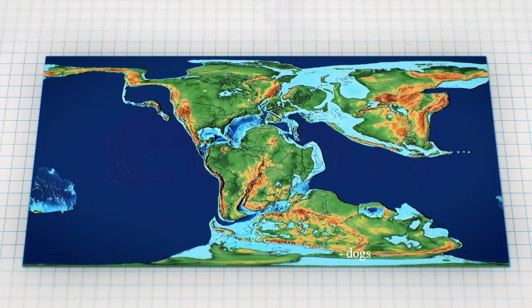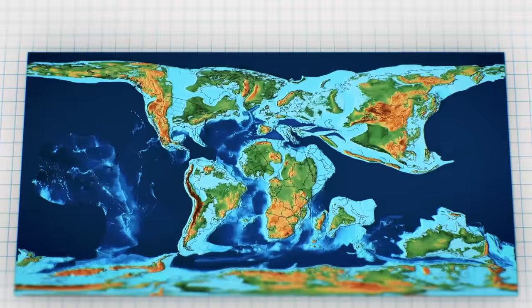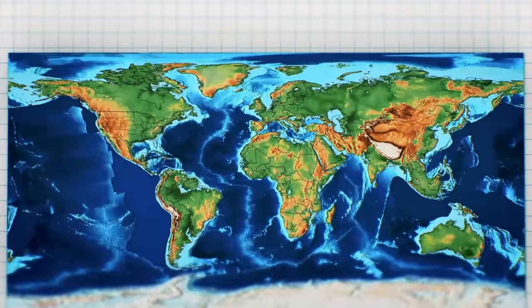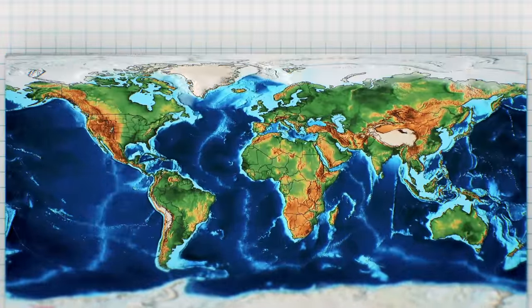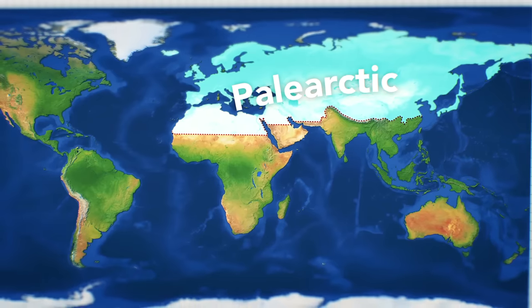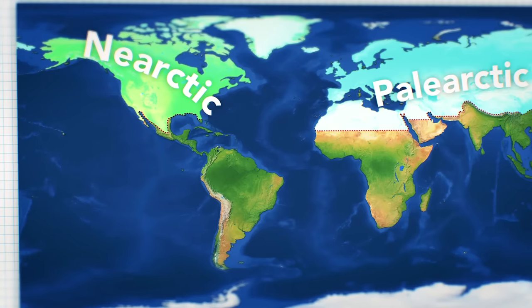However, just like its predecessor, as Laurasia aged, it too began to break apart, with the central Atlantic rift cutting a line between Europe and Greenland, effectively splitting the Arctic realm in two. On one side, the Palearctic, the Paleo in reference to this being considered by many to be part of the Old World. On the other side, the Nearctic, or the New World Arctic.